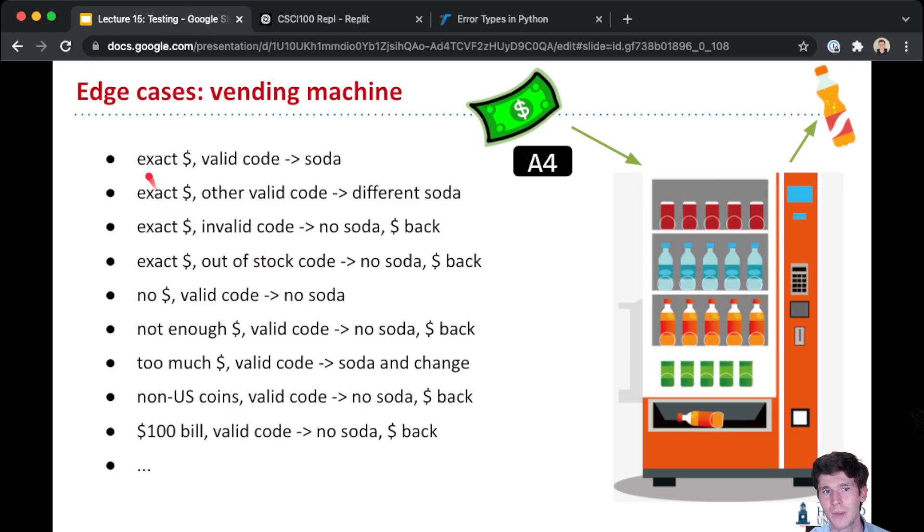Honestly, maybe the way I would think about this is these here would be the common cases—you could just make sure that with the right amount of money and a valid code we get soda. But all of these other things down here are edge cases. It's not a hard and fast distinction. You won't be wrong if you call something an edge case or something a common case, but it's a mental kind of way of thinking about how to break a problem down, its possible inputs, into two pieces.